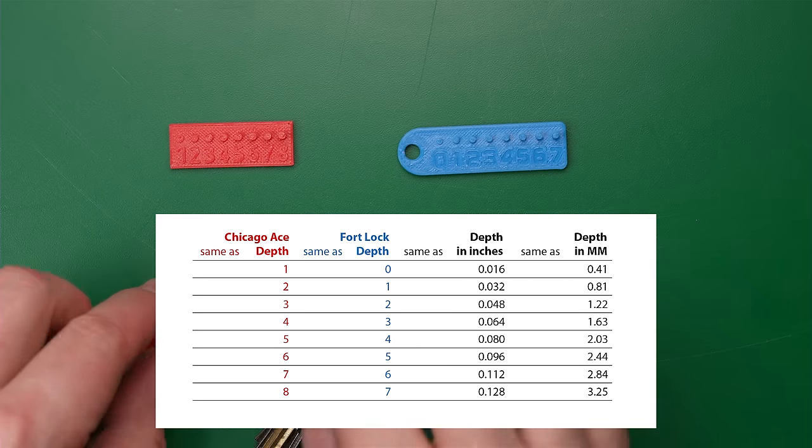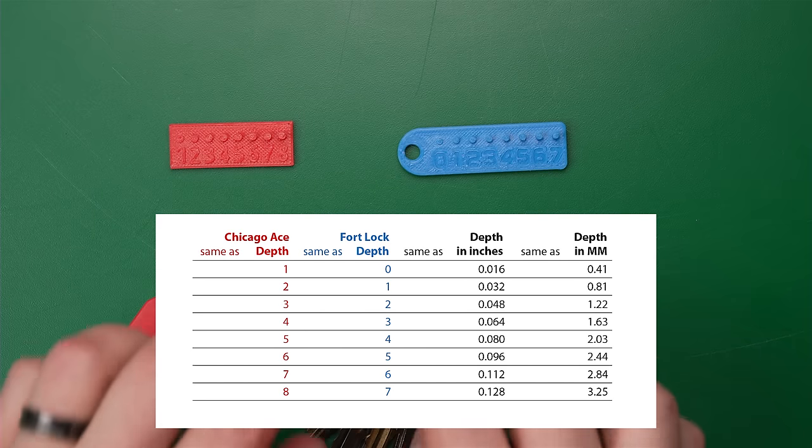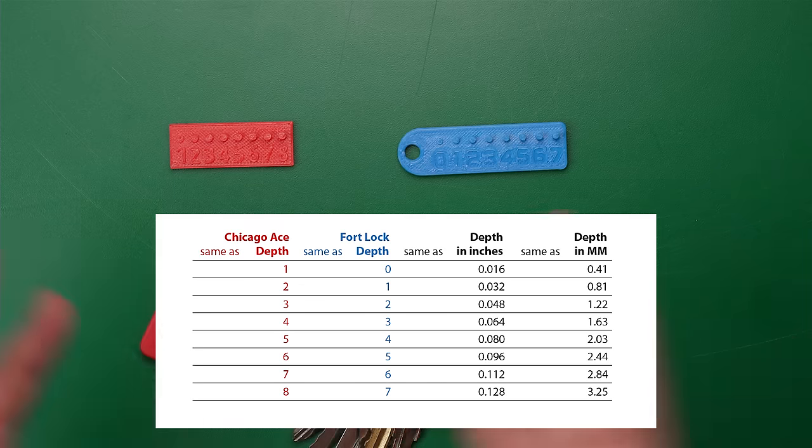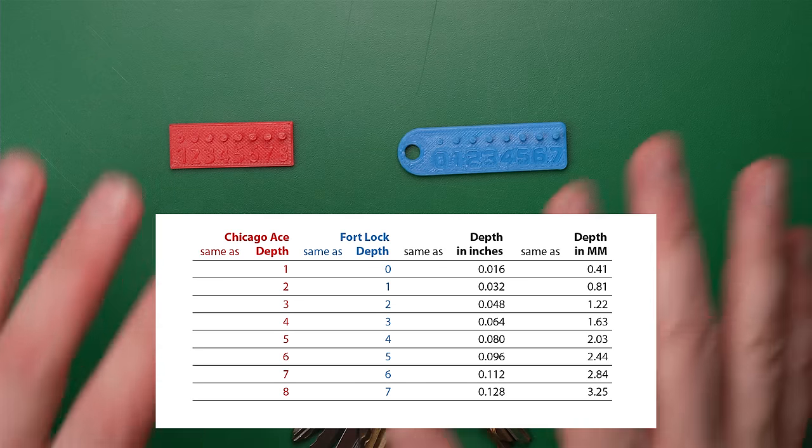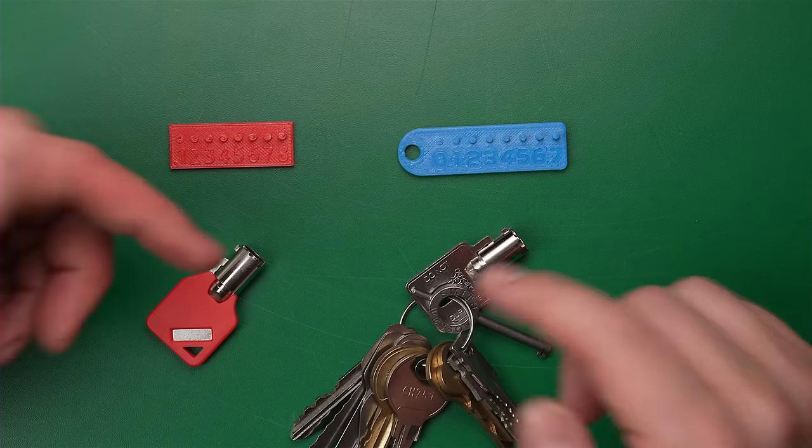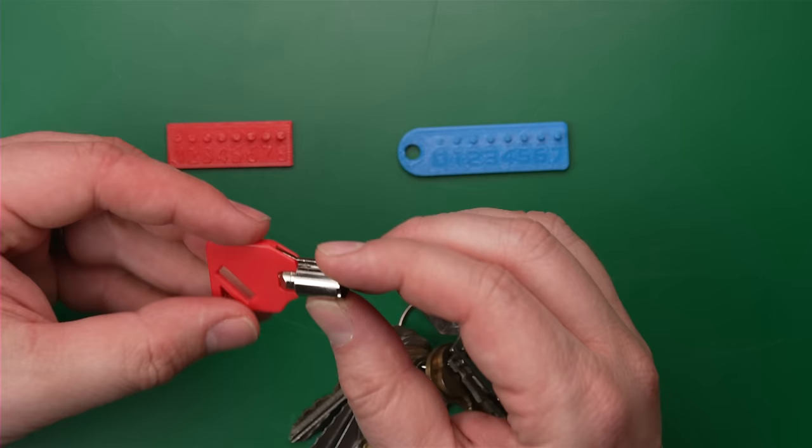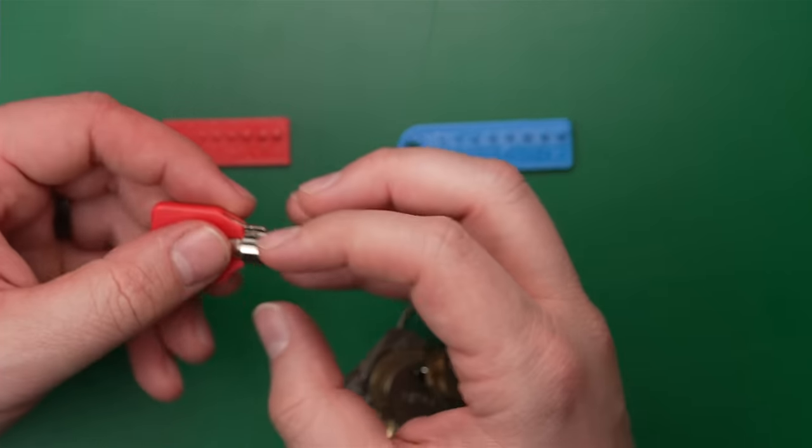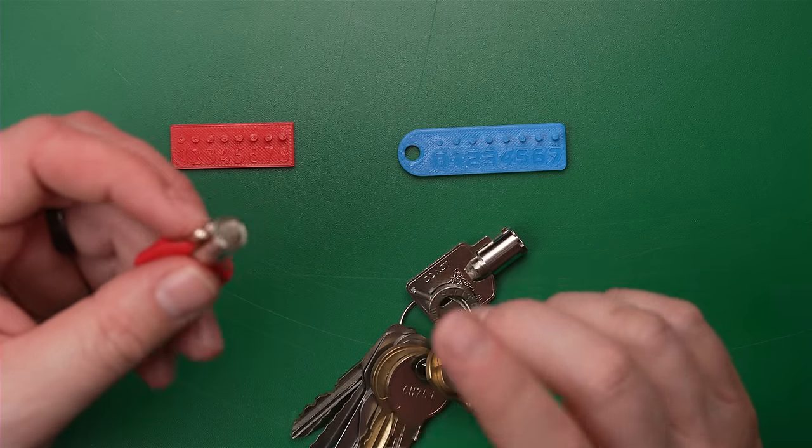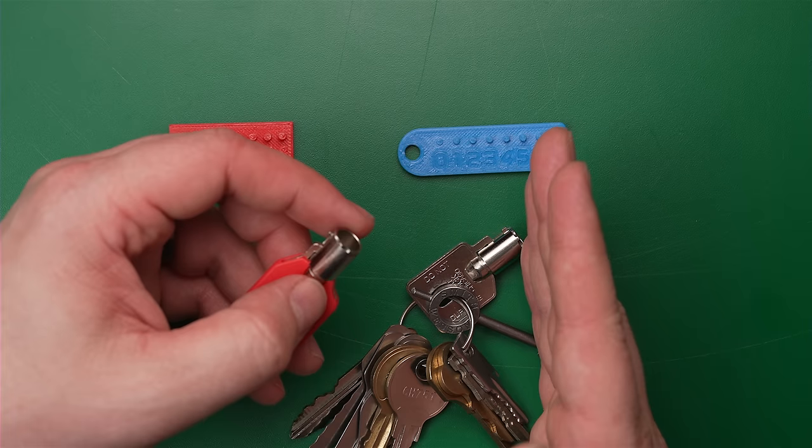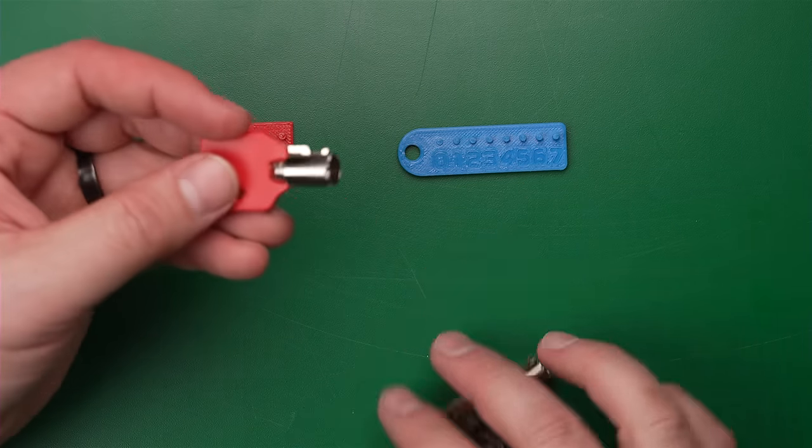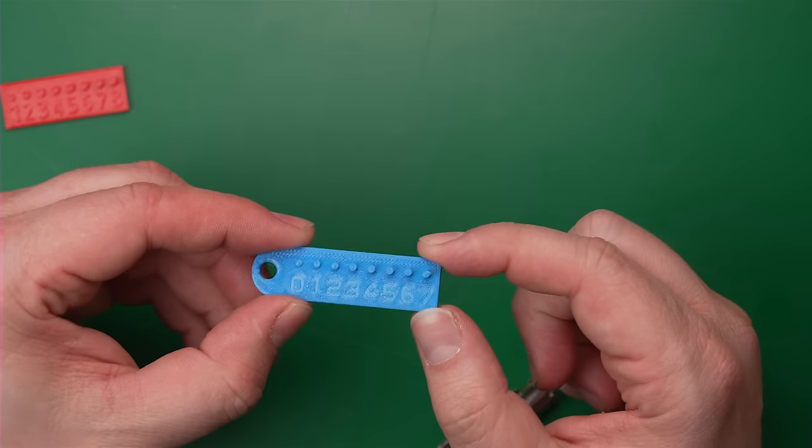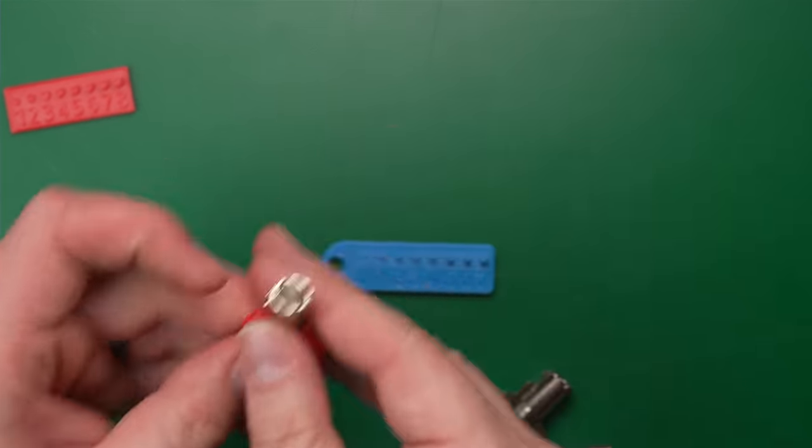Now we have the Fort Lock Company making the GEM product line. So GEM is a series of tubular keys that became very popular once tubular key duplication was more widespread. They use the exact same bidding depths. They have the same values of cut, but they number them 0 through 7. You can see it on the chart here. Same exact depths, just called something different. How would that be measured?